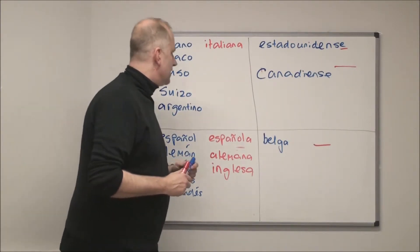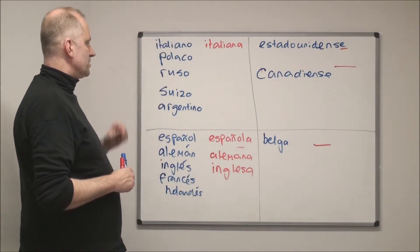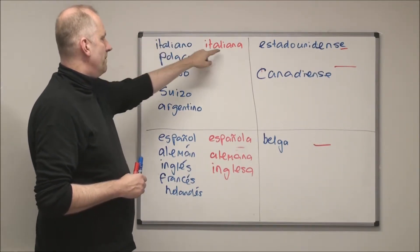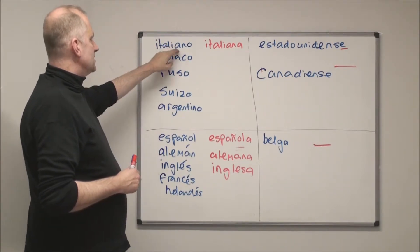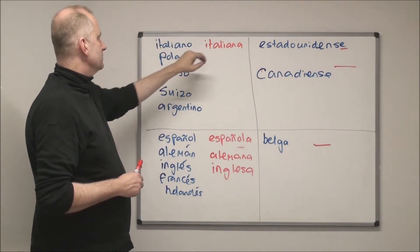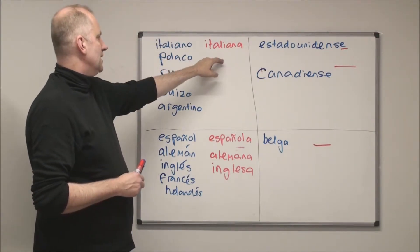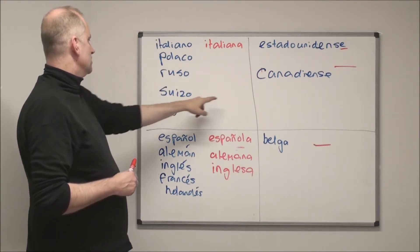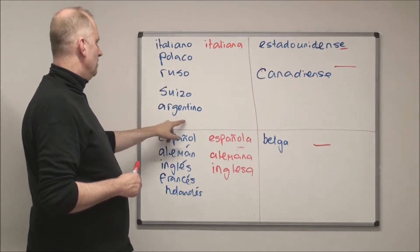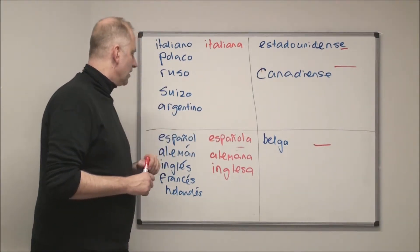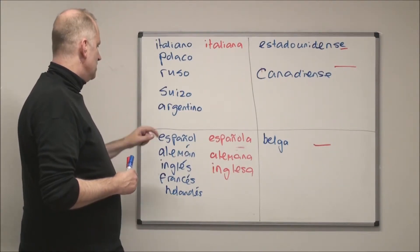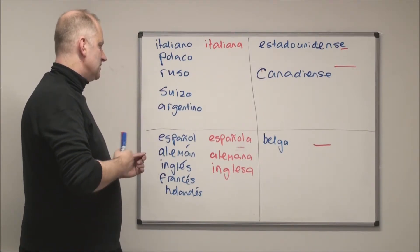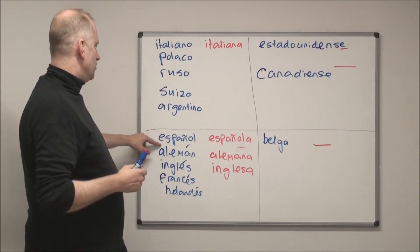Now let's practice pronunciation — just repeat after me. Group one: 'italiano/italiana', 'polaco/polaca', 'russo/rusa', 'suizo/suiza', 'argentino/argentina'. Now the ones that end in a consonant in the masculine — remember to add an extra syllable: 'español' becomes 'española'.